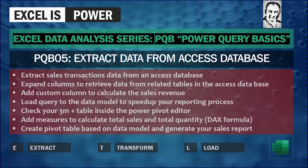We are also going to check our data inside the Power Pivot Editor — it's around 3 million records. We will add measures to calculate Sales Totals, Sales Quantity, and Average Price using DAX formulas (Data Analysis Expression formulas). And finally, we are going to create a pivot table to generate our sales report.